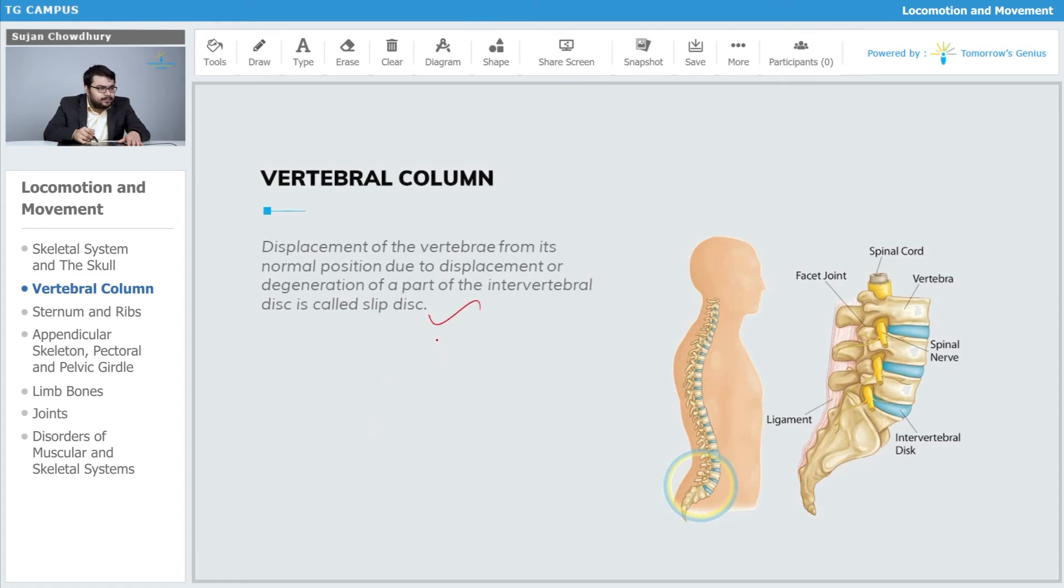By slip disc, what happens is the displacement of the vertebrae is observed from its normal position, and this occurs due to displacement or degeneration of a part of the intervertebral disc. We can clearly see the intervertebral disc here on this image.